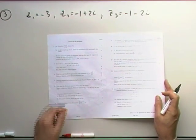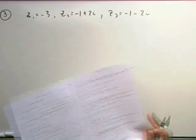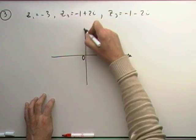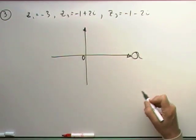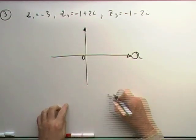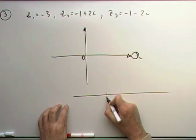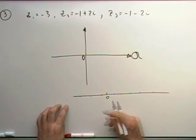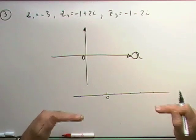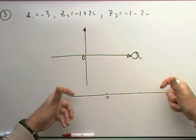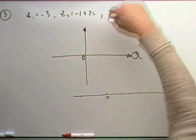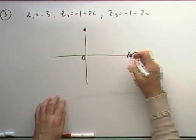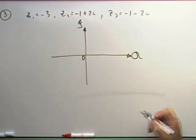Plot the roots on an Argand diagram. An Argand diagram is just like a normal coordinate diagram — it's an extension of the number line. The real numbers go along the horizontal axis, and the imaginary part extends vertically. It's like having a plane where the real part goes left-right and the imaginary part goes up and down.